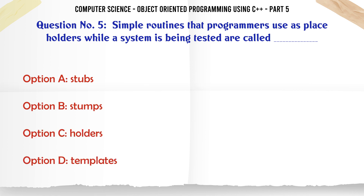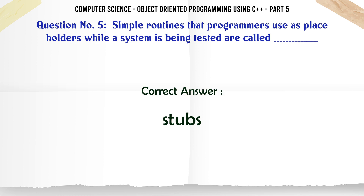Simple routines that programmers use as placeholders while a system is being tested are called. A. Stubs. B. Stumps. C. Holders. D. Templates. The correct answer is: Stubs.